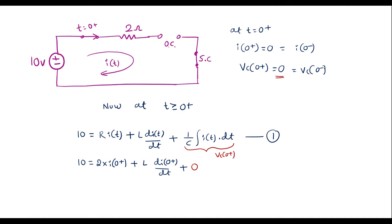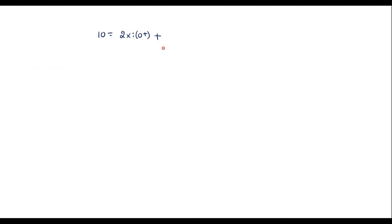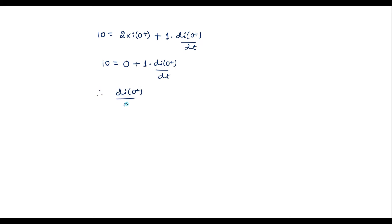Let me simplify this further. We have 10 equal to 2 into I of 0 plus, plus 1 into di of 0 plus by dt, since L is 1 Henry. Substituting I of 0 plus equals 0, we get 2 into 0 plus 1 into di of 0 plus by dt equals 10. Therefore, di of 0 plus by dt is equal to 10 amperes per second.